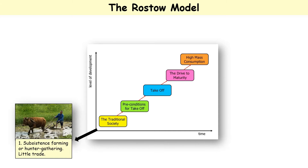Each country should start as a traditional society with subsistence farming - that means just growing food for yourself - hunter-gathering, where you go out and collect food and hunt animals, and very little trade going on.